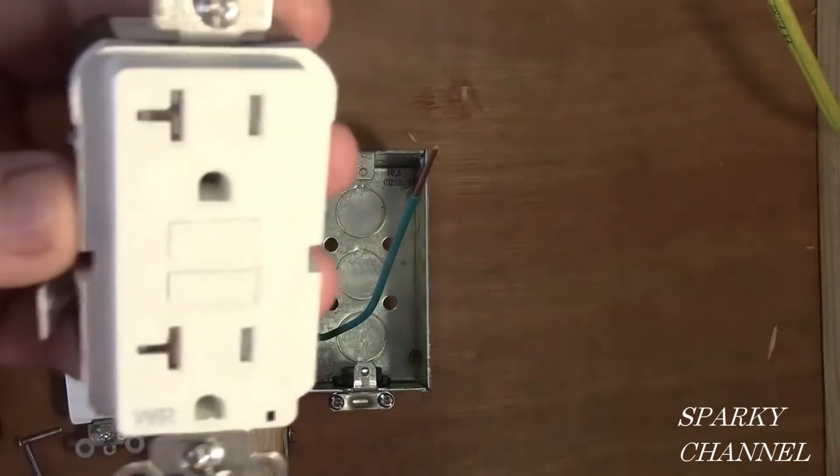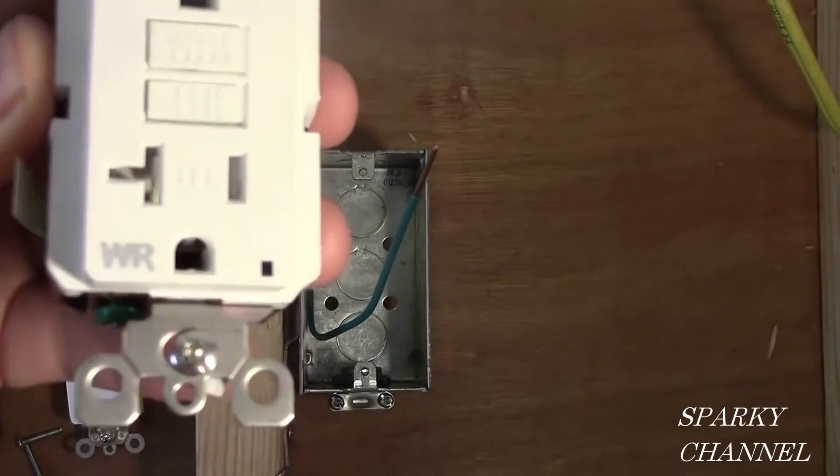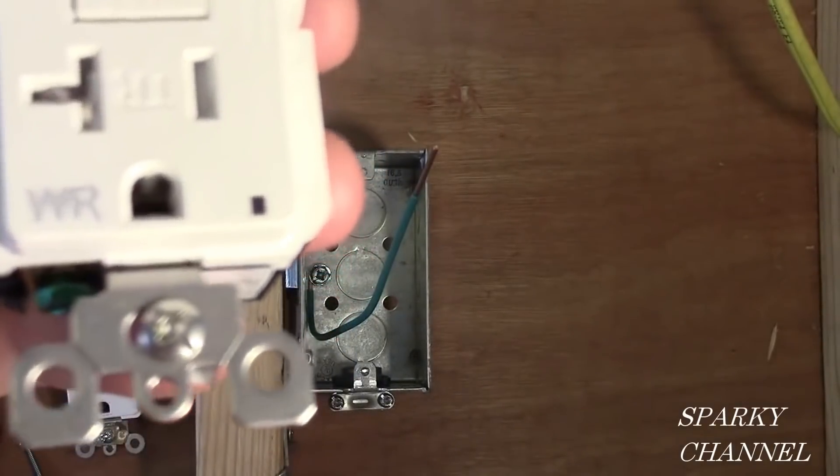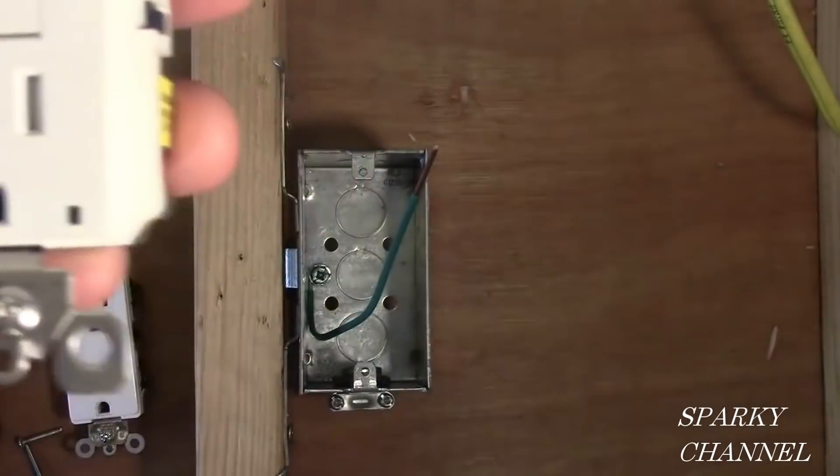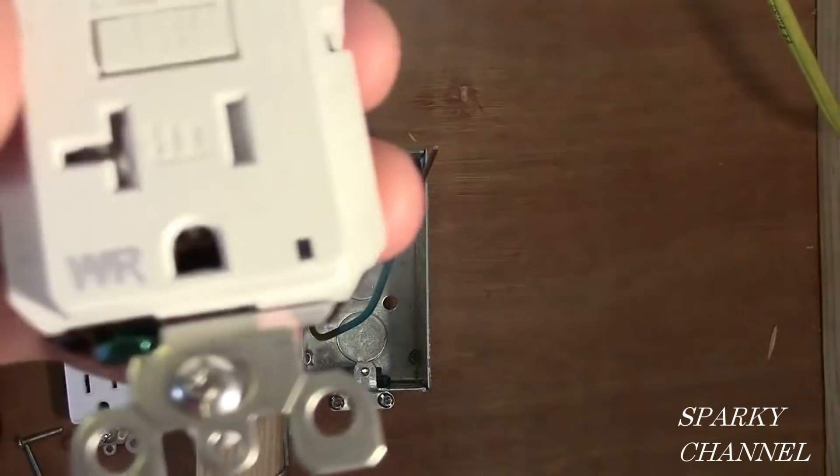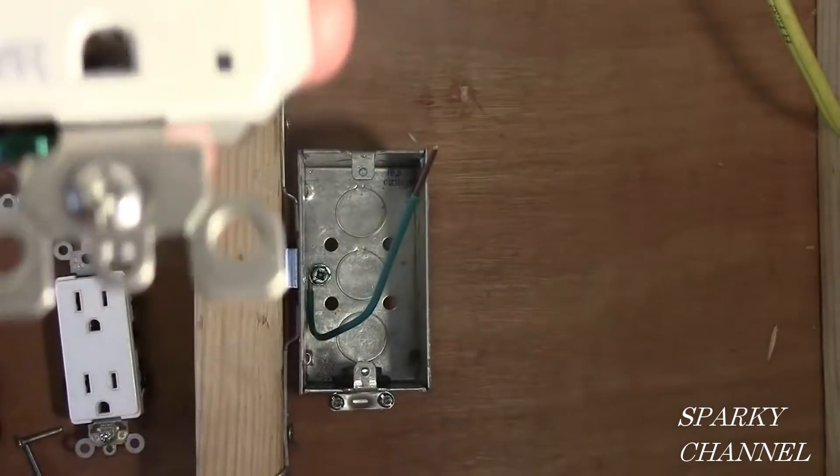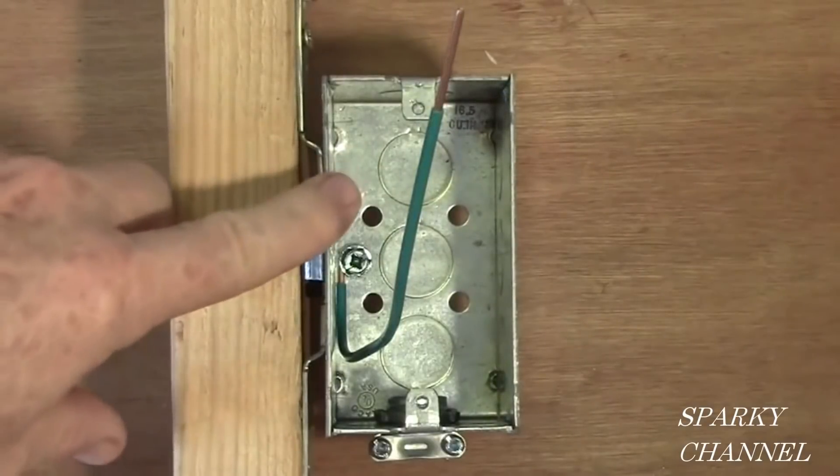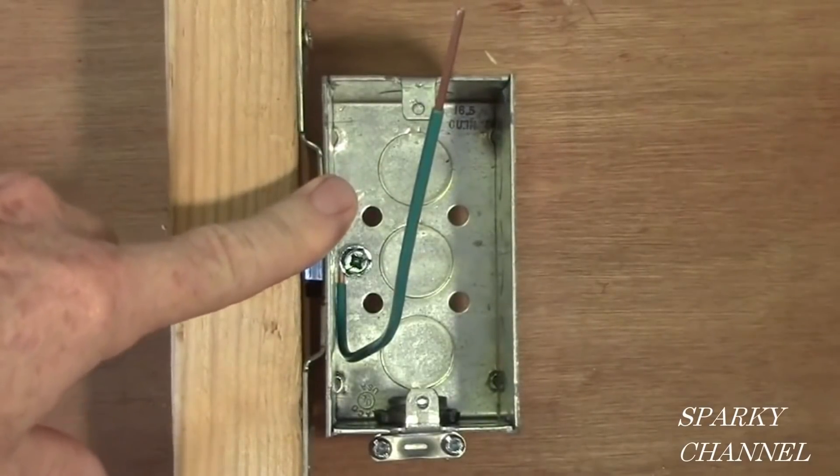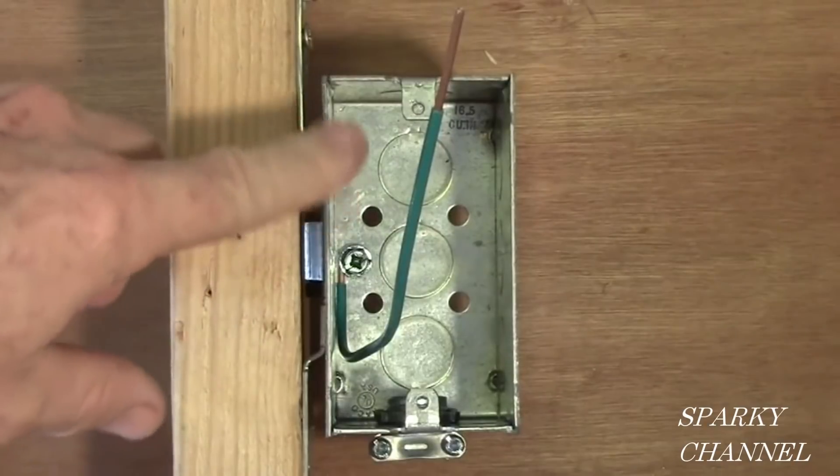This is a 20 amp GFCI weather resistant, and you'll notice it doesn't have one. So some of them do have the self-grounding clips and some of them don't. When you connect your metal box to the ground system for your house, that's called bonding.